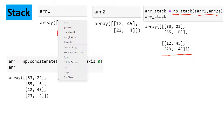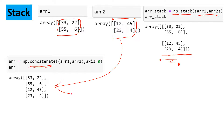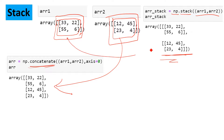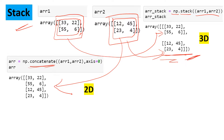The difference is: in concatenate with axis=0, it takes the array elements and combines them together one below another. But with stack, it takes the whole array including the bracket and puts one whole array below another — it is not combining the element contents, it is simply putting one array below another. So stack produces a 3D array, whereas concatenate produces a 2D array.